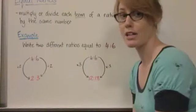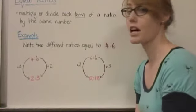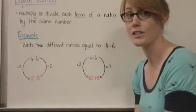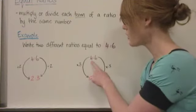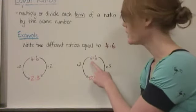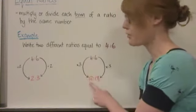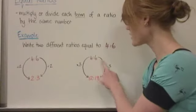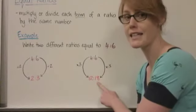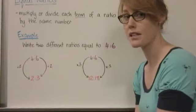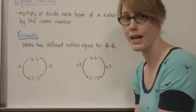Over here I've got my ratio again, 4 to 6, and this time I've decided to multiply each term by the same number. So I'm going to multiply each term by 3. 4 multiplied by 3 is 12, and 6 multiplied by 3 is 18. So an equal ratio for 4 to 6 would be 12 to 18.